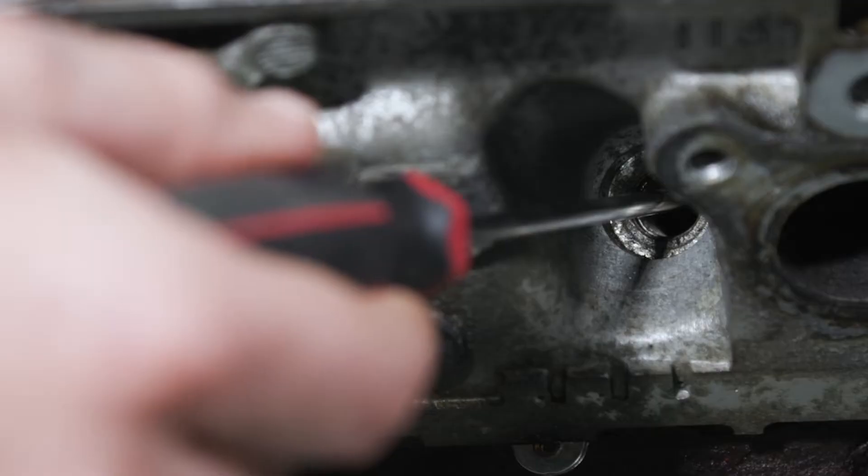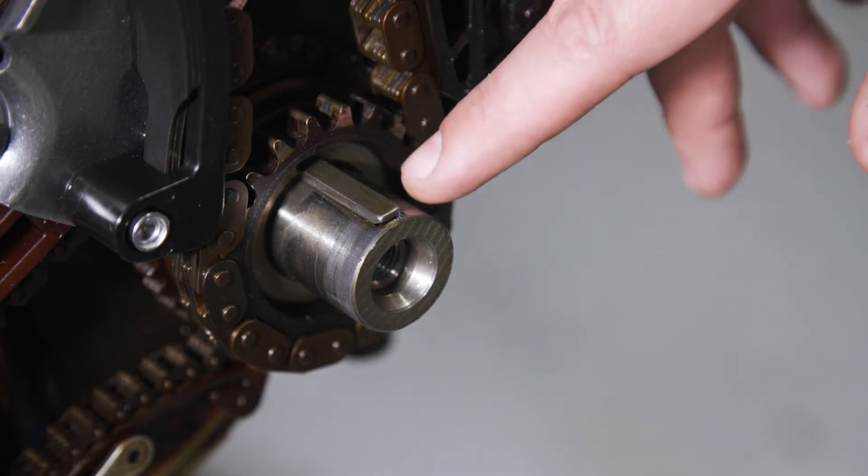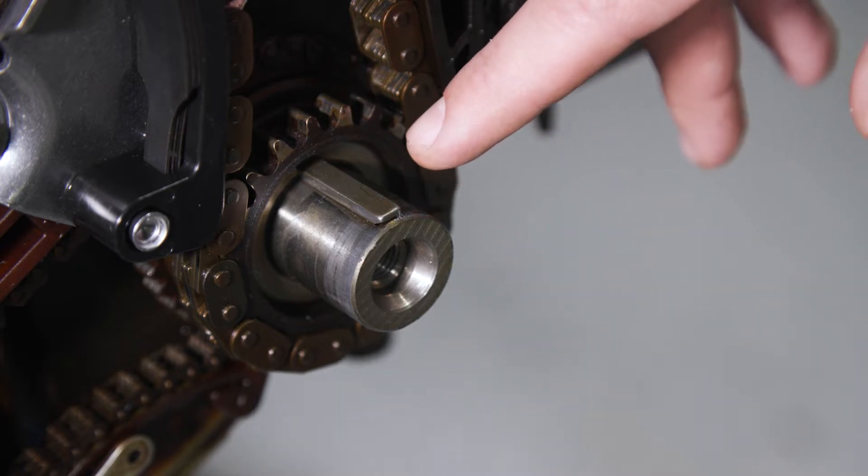You'll need to remove cylinder number one spark plug to see if the piston is at the top of the stroke. Use the top dead center tool again to verify and position the keyway at 12 o'clock.